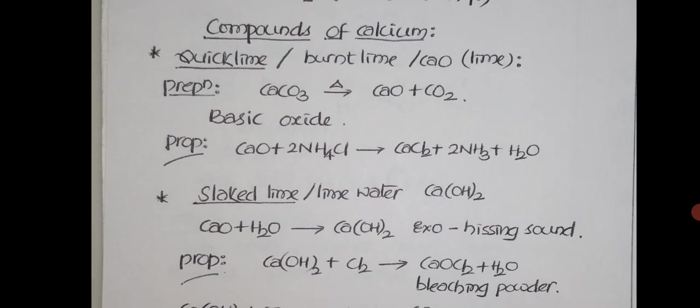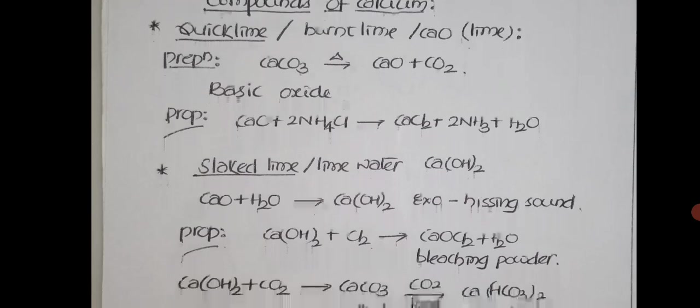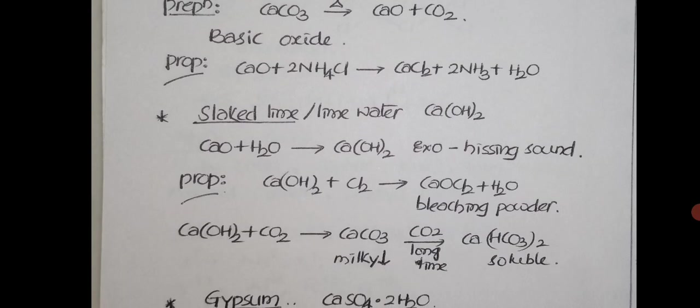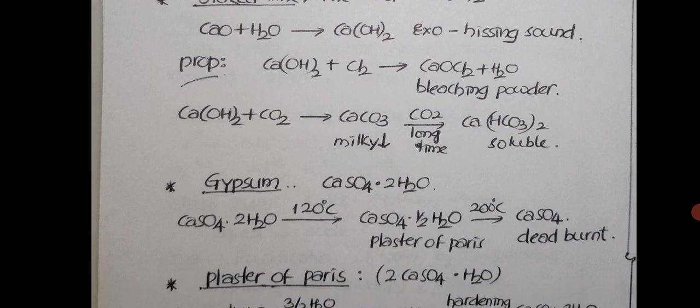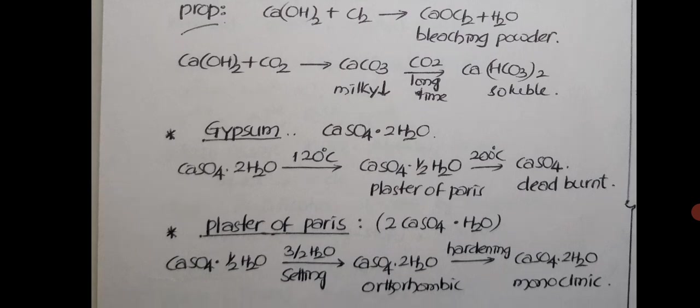Compounds of calcium are very special, very important. First is quick lime or burnt lime or CaO, lime. CaCO3 on heating gives CaO. CaO is basic oxide. It reacts with ammonium type compounds, ammonium chloride type, and releases ammonia, like sodium hydroxide. Slaked lime or lime water is calcium hydroxide. CaO plus H2O gives Ca(OH)2. It is exothermic reaction with a hissing sound. Calcium hydroxide when reacts with chlorine forms CaOCl2, bleaching powder. In bleaching powder, what are the oxidation states of chlorine? Contains two chlorines: one with minus one state and another with plus one oxidation state. When calcium hydroxide reacts with carbon dioxide, first it forms calcium carbonate, a white precipitate. If carbon dioxide is passed for a long time, that white precipitate is soluble to form calcium bicarbonate. Very special point.